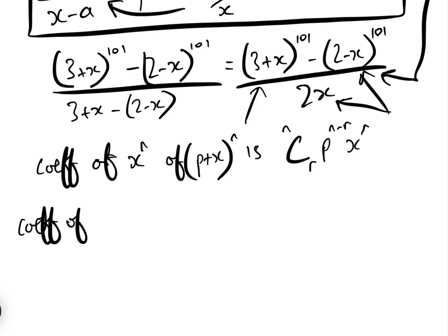So basically our coefficient of x to the 26 is going to be, using this formula here, it's going to be 101C26 times 3 to the 75 x to the 26. That's this one.